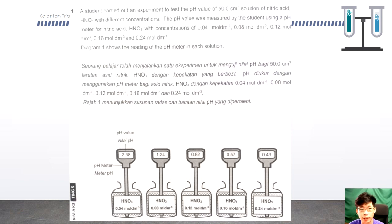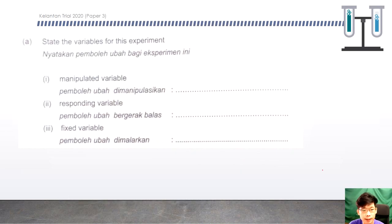Question 1. A student carried out an experiment to test the pH value for 50 cubic cm solution of nitric acid with different concentrations. The pH was measured using a pH meter for nitric acid with concentrations of 0.04, 0.08, 0.12, 0.16 and 0.24 mol per cubic decimetre. The diagram shows the pH meter reading for each solution with five sets of apparatus. The manipulated variable is the concentration of nitric acid. The responding variable is the pH value.